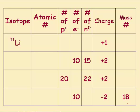Protons, neutrons, electrons. Charge, mass number, and atomic number. Remember what I said about these tables — I am not going to keep the columns in the same order. So you can't just memorize the second column or add the third and fifth to get the last. You've got to understand what these things mean.